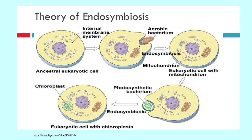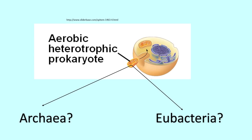A very similar endosymbiotic theory hypothesizes the origin of chloroplasts. In this process, a eukaryote with a mitochondria engulfs but does not digest a photosynthetic cyanobacterium. The eukaryote and the cyanobacterium share a symbiotic relationship, and over time the symbiont cyanobacterium loses its genes and becomes a chloroplast.